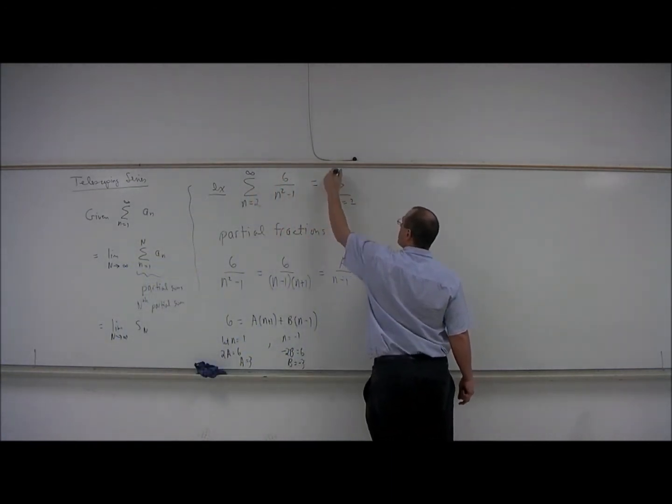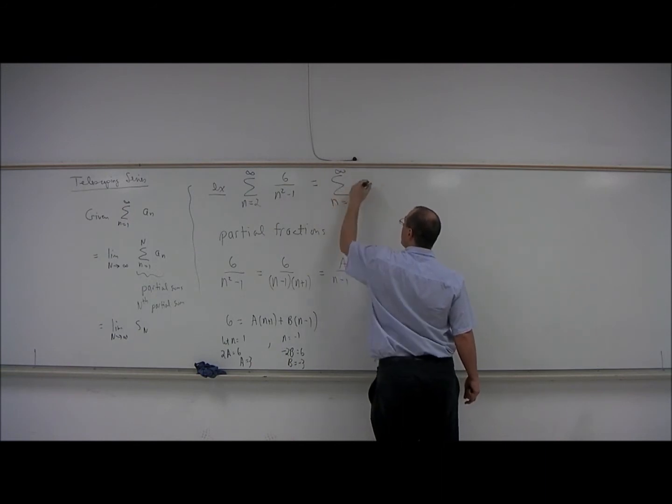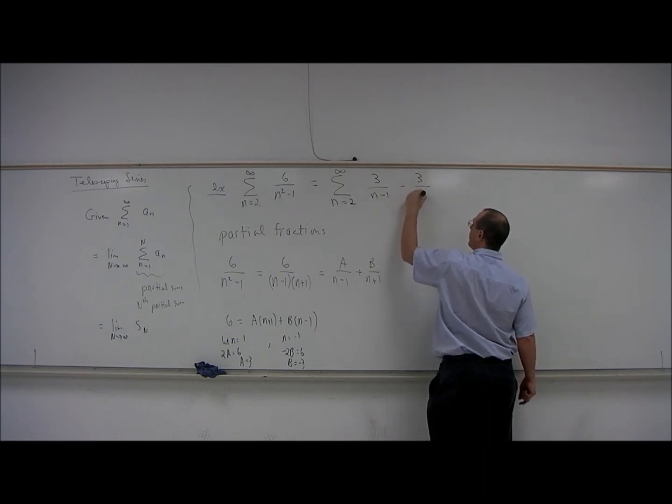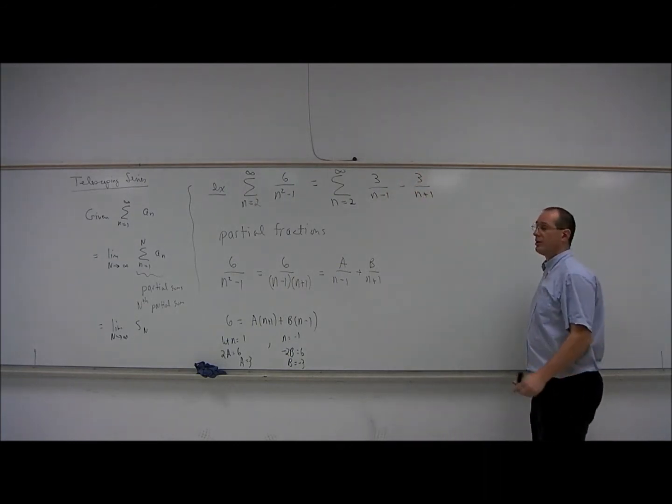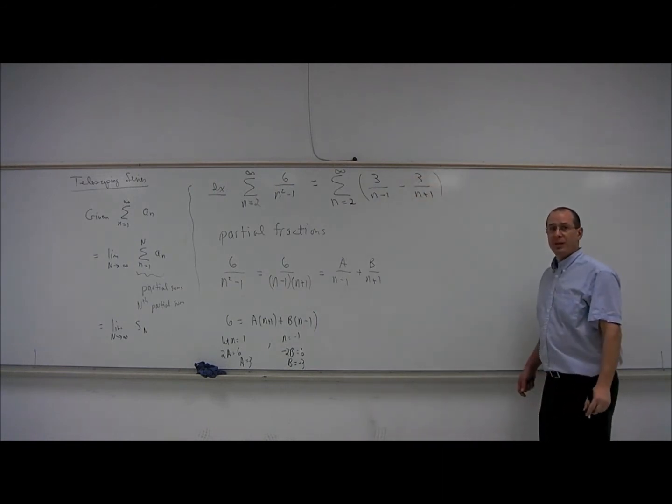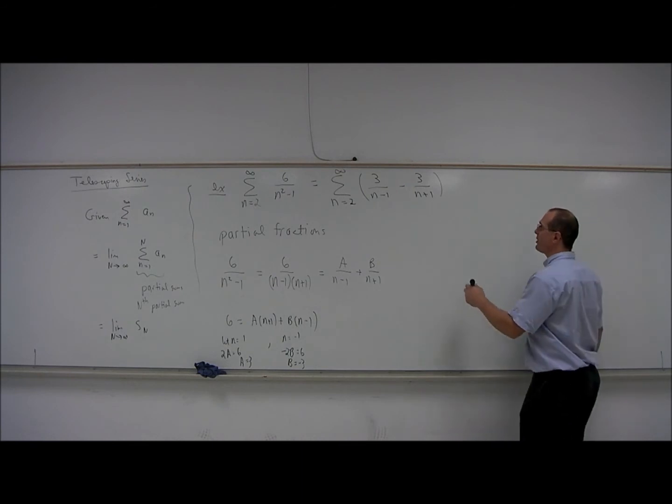So these fractions can be split, n equals 2 to infinity, 3 over n minus 1 minus 3 over n plus 1. And when we start adding them, something interesting will happen. So let's start adding these fractions together.